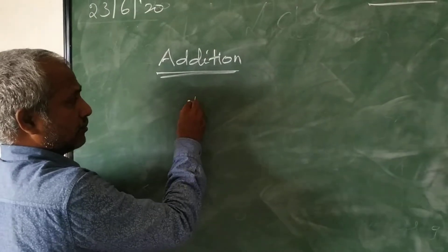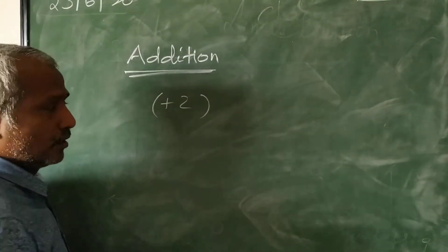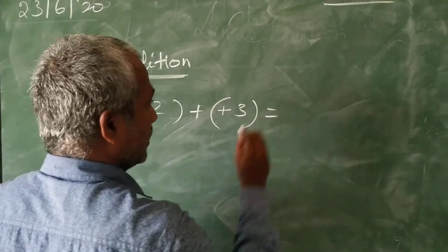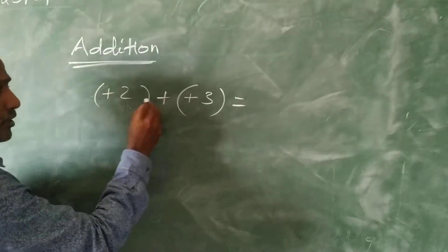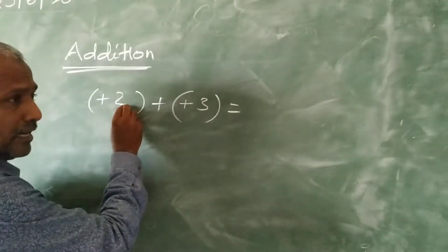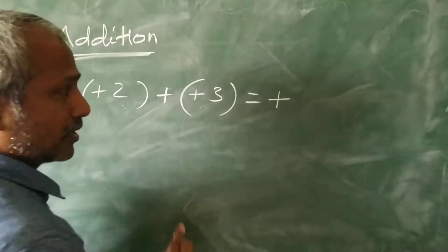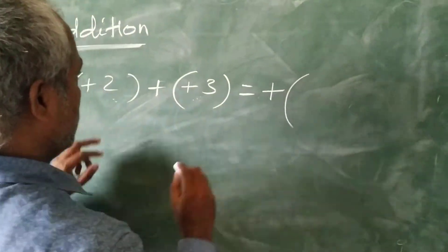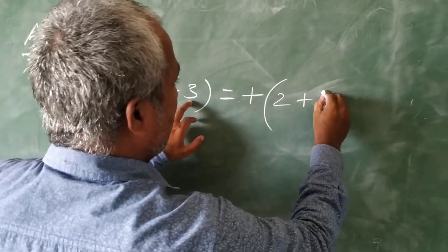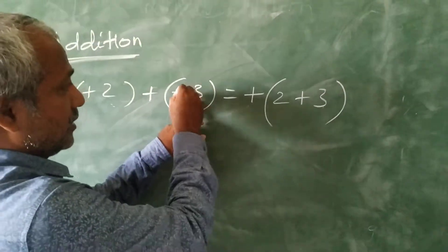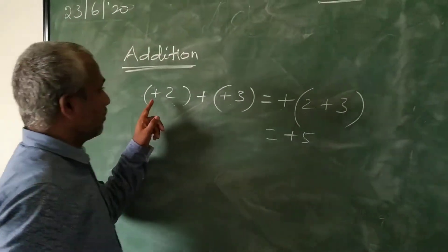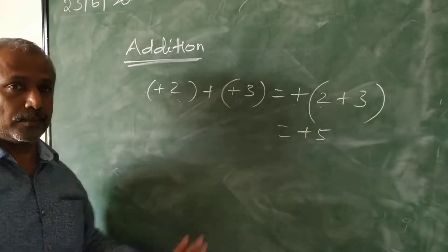I am taking one integer, plus 2, and adding it with the same sign, that is plus 3. Look at those two integers — both have plus signs. If you are adding numbers of the same sign, first take the sign outside commonly. Then write 2 plus 3. We already took the plus sign outside, so plus 2 plus plus 3 simply gives plus 5.